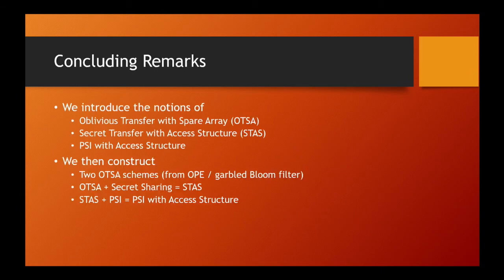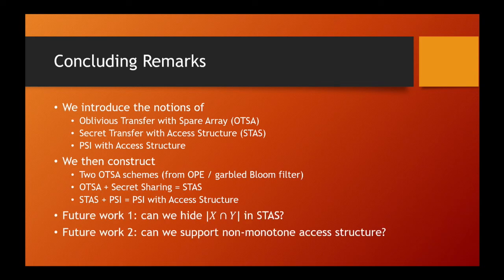To conclude, we introduce a few new notions and present a series of constructions leading to PSI with access structure. Future work includes hiding the size of the intersection in STAS, and supporting non-monotone access structures. Yongjun and Sherman solve these two problems in another paper, and they can be contacted at the listed addresses.